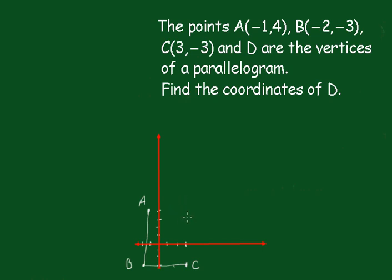So D is going to be located in this area here. Now to work out where D is, I'm going to go from B across to A. Let's write these coordinates in: A is (-1,4), B is (-2,-3), and C is (3,-3). Now to go from B to A, I've got to go across 1 and up a total of 7.